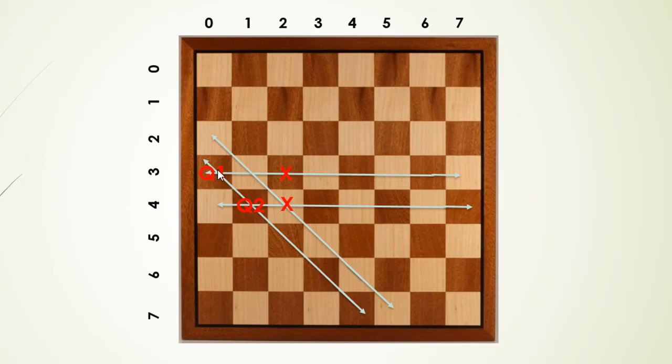And now we have to just verify if any queen is attacking another diagonally. So in the previous example, the two queens are attacking diagonally, queen 1 and queen 2. So even if no other queen would attack any other queen, we still would not have a valid solution because the premise is that no queen can attack any other queen.